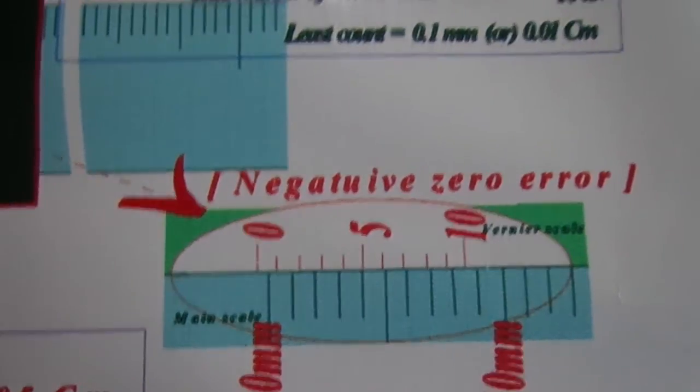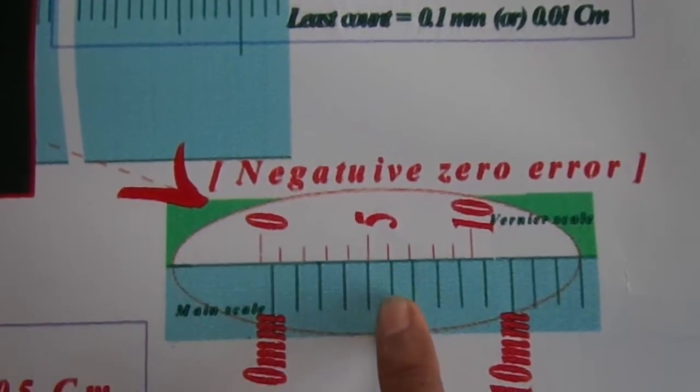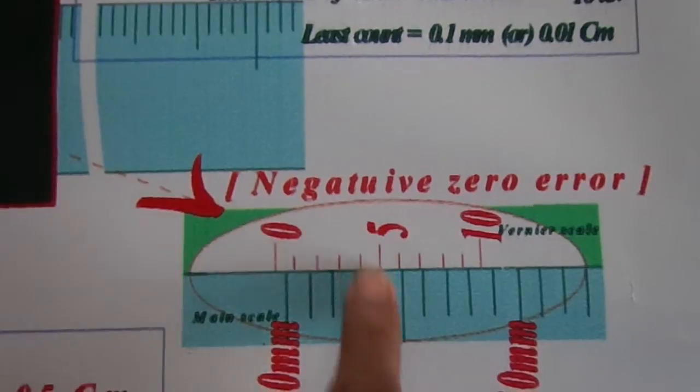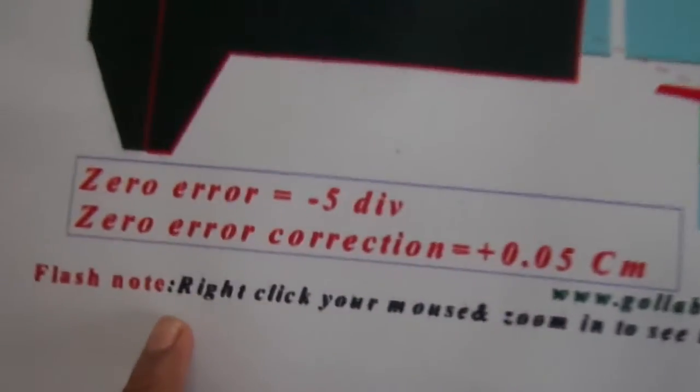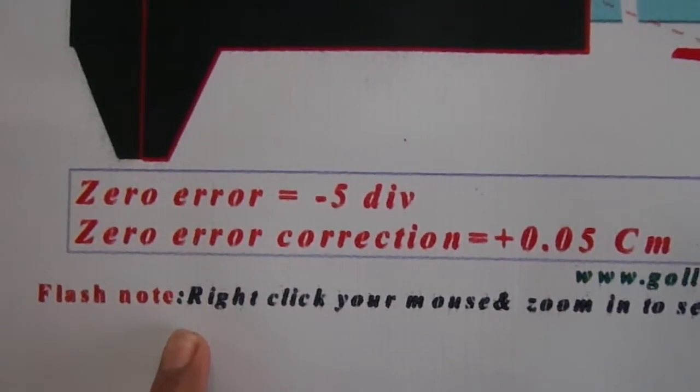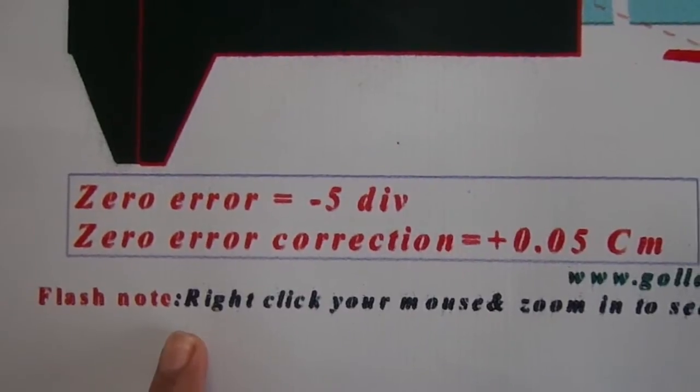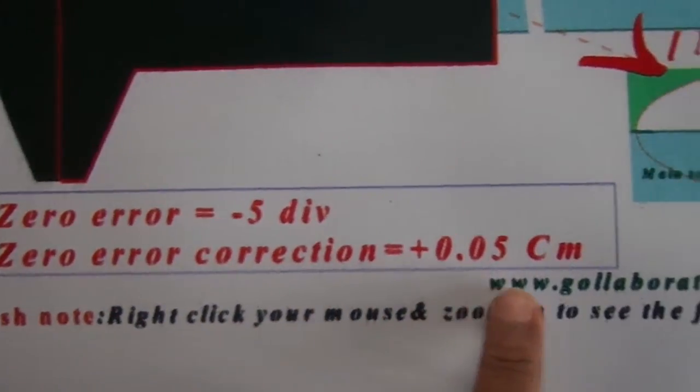In this case it happens to be the fifth division, exactly in coincidence. So the error is minus five divisions, and the error correction is plus 0.05 centimeter.